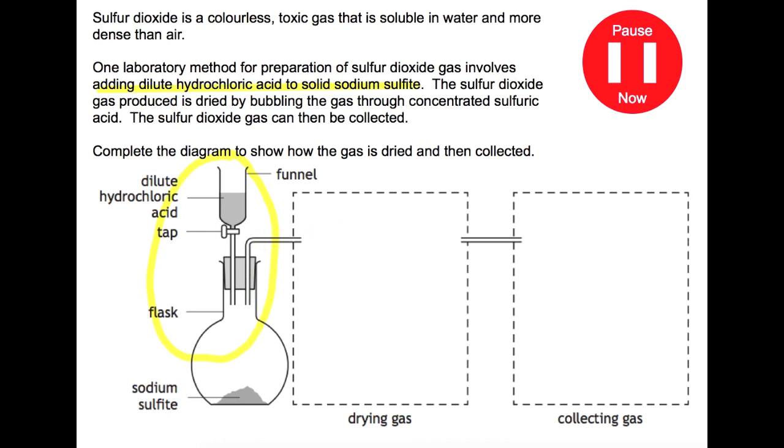The second part says we've got sulfur dioxide gases produced and is dried by bubbling the gas through concentrated sulfuric acid. So that's what's going to go into our second box here. The sulfur dioxide can then be collected so that will be our third box is trying to collect it. So to be able to work out how we are going to dry the gas and collect it we need to have a look at the information that we got given at the start. So it says that it's soluble in water and more dense than air.